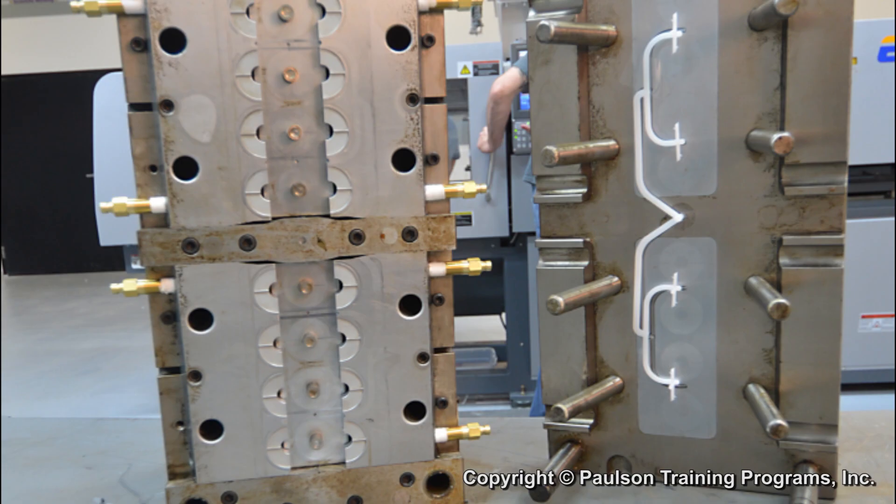Now we'll look at the plastic flow passages in the mold. We saw this part earlier. Here is the sprue, runner, gates, and the cavities which will form the plastic part.